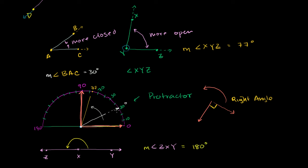You can actually go beyond that. If you were to go all the way around the circle, you would get back to 360 degrees, and then you could keep going round and round. You'll start to see a lot more of that when you enter a trigonometry class.